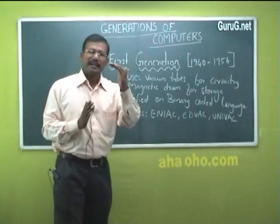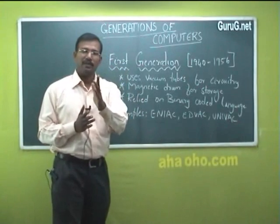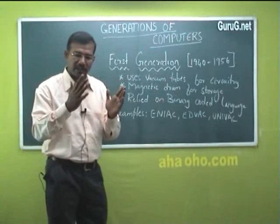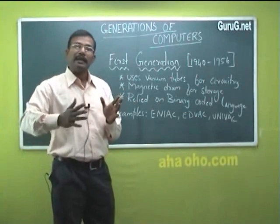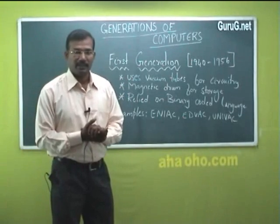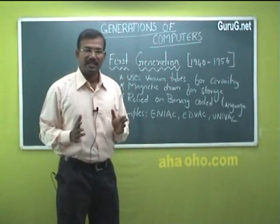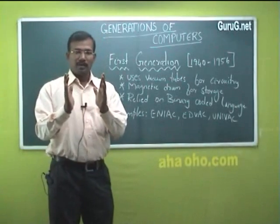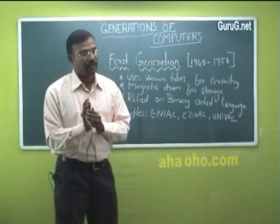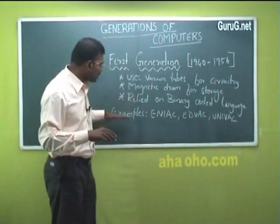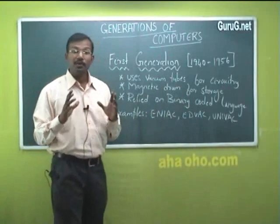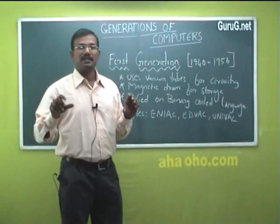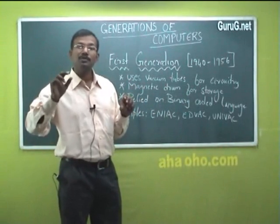Another characteristic was that commercial appeal was not there — first generation computers were not able to reach the market as expected. For input, systems like ENIAC and UNIVAC used perforated cards, also called punched cards, along with paper tapes.